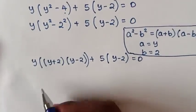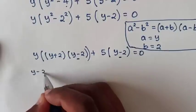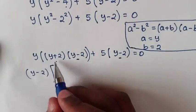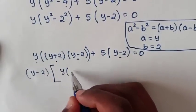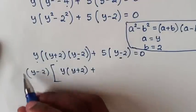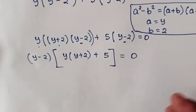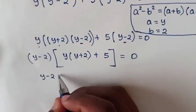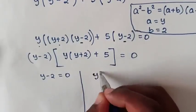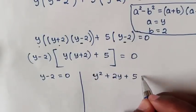In our equation, y minus 2 is common, so we take y minus 2 out of bracket: y minus 2, big bracket y bracket y plus 2 plus 5, equal to 0. Expanding: y minus 2 bracket y squared plus 2y plus 5 is equal to 0. We have two cases: first case, y minus 2 equals 0; second case, y squared plus 2y plus 5 equals 0.